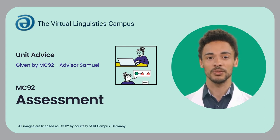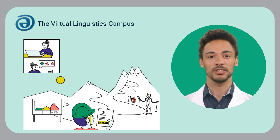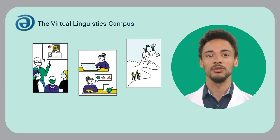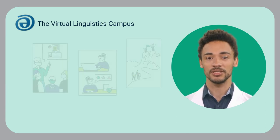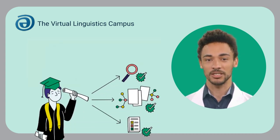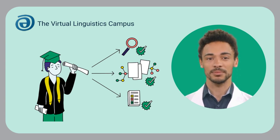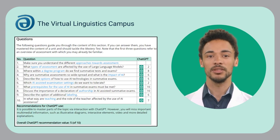Welcome, it's me again — Samuel, your MC92 support. This third section of the MC92 course deals with assessment and the use of AI tools. The central issues are: how are different forms of assessment affected by the use of AI language assistance, when and why is the use of text-generating tools cheating, and how can didactic measures and assessment criteria be adapted to the changed conditions.